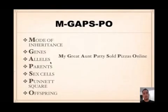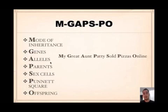MGAP's Poe — here's a way to remember it: Mode of inheritance, Genes, Alleles, Parents, Sex cells, Punnett squares, and Offspring. A good way to remember it is: My Great Aunt Patty Sold Pizzas Online.